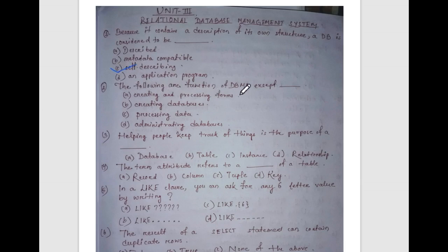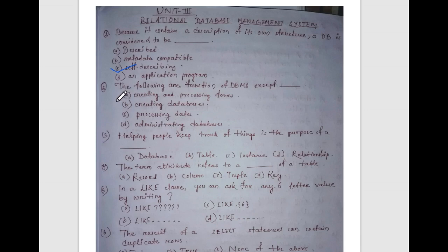The following are the functions of DBMS, except — creating and processing forms, creating databases, processing data, administrating databases. The answer is creating and processing forms, as that is not a function of DBMS.